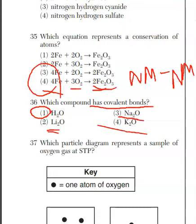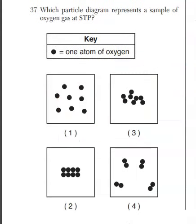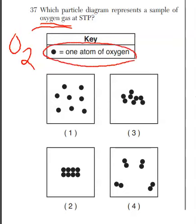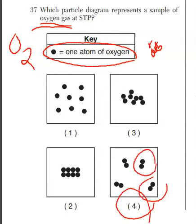Moving on to 37. For question 37, this is New York State trying to trick you because you're asked which particle diagram, that's your dots, represents a sample of oxygen at STP. What you have to remember is oxygen alone is a diatomic molecule. While one filled in dot is going to represent one atom of oxygen, oxygen gas is two atoms. Those are my two dots. In other words, it's got to be choice four. You have your diatomic molecules and they're spaced far apart.